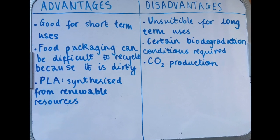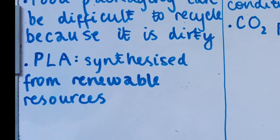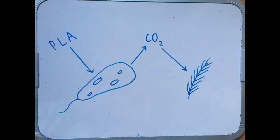One big advantage of PLA is that the lactic acid that is polymerized in its synthesis can be derived from renewable resources such as starch. This means the CO2 released into the atmosphere during its breakdown is cancelled out by the removal of CO2 by the starch as it grows.